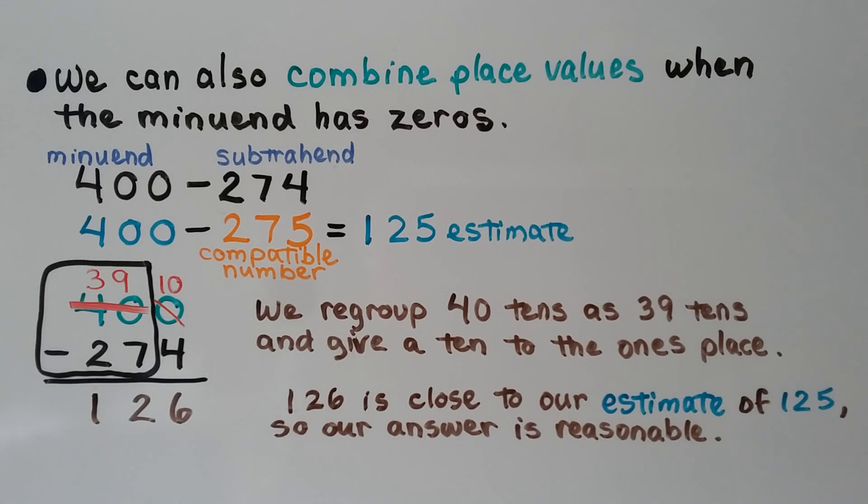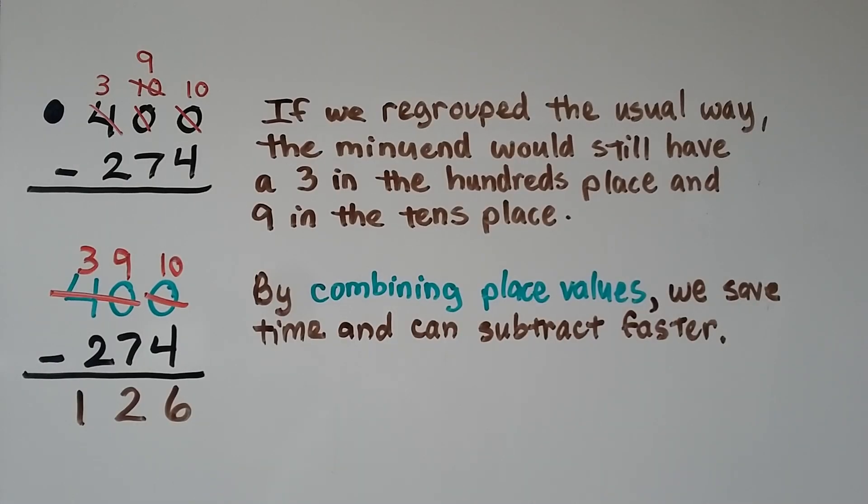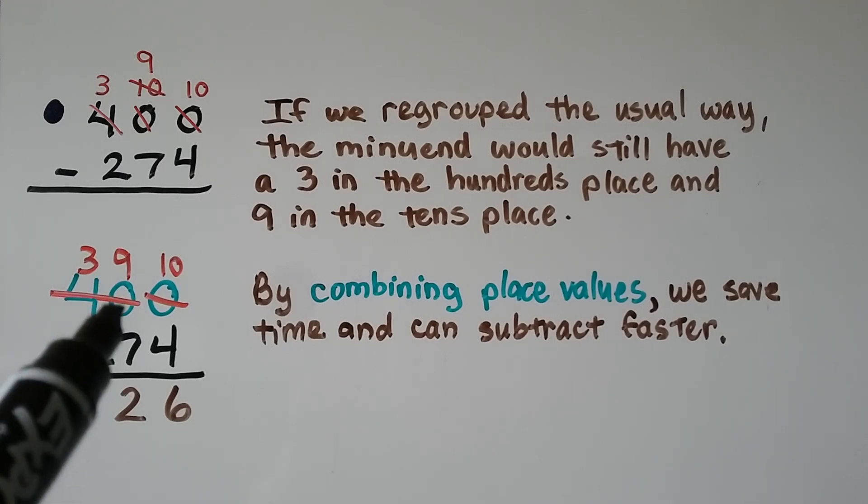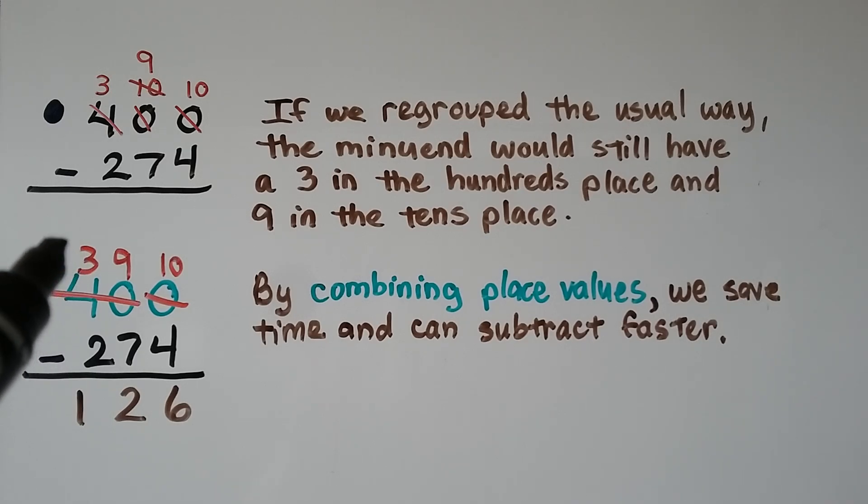So let's see if we understand this a little bit more. With the same problem, if we regrouped the usual way, the minuend would still have a 3 in the hundreds place and a 9 in the tens place. We would still have a 3 and a 9. The difference is we don't have to regroup twice. See? If we turned this into a 3 and gave 10 tens to the tens place, that would be a 10 tens. And we would still need to regroup and make it a 9 to give a 10 to the ones place. By combining place values, we save time and just turn 40 tens into 39 tens and give that extra 10 to the ones place. We can subtract faster.